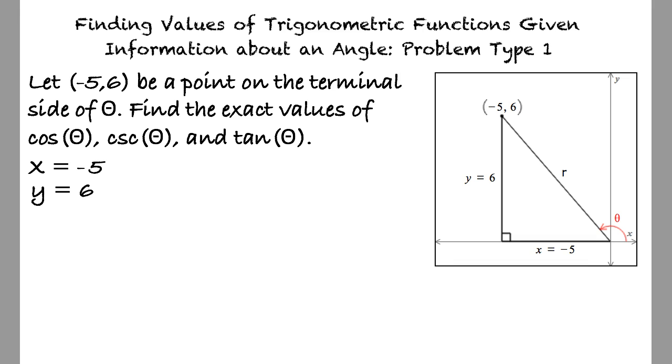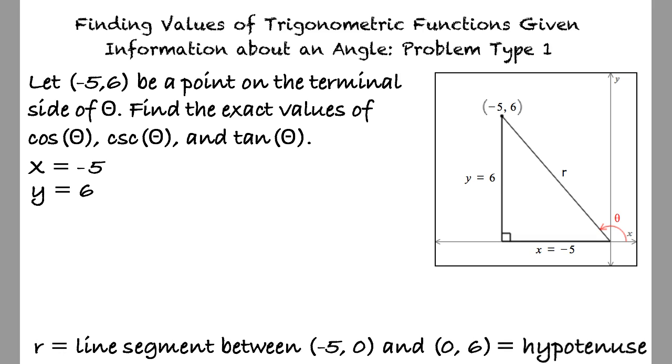We can refer to the hypotenuse as r, and its value will be equal to the square root of (-5)² plus 6², according to the Pythagorean theorem. Solving for r equals the square root of 61.